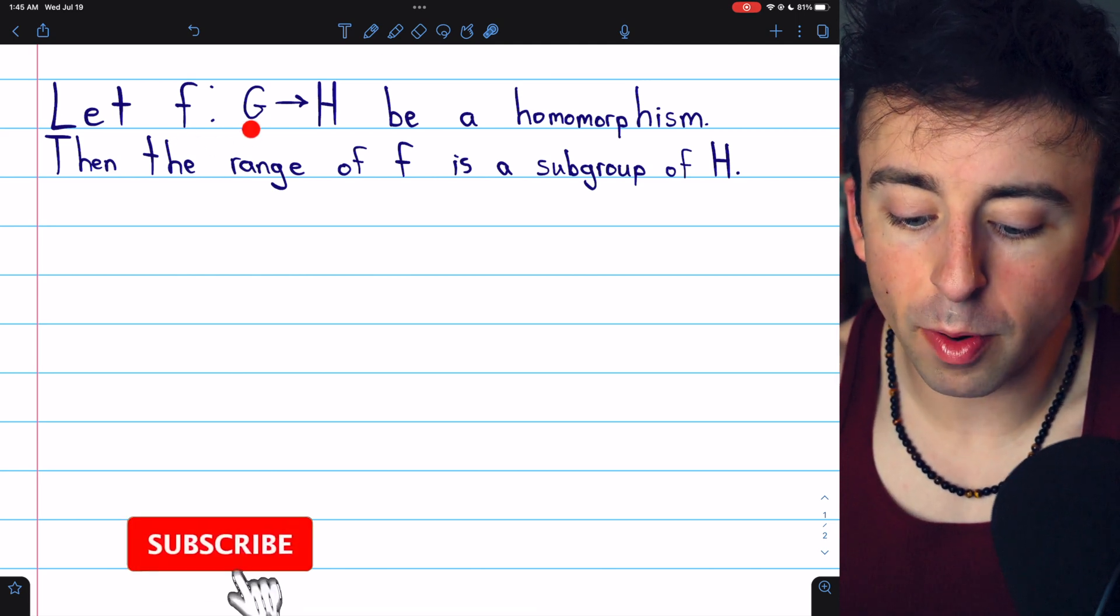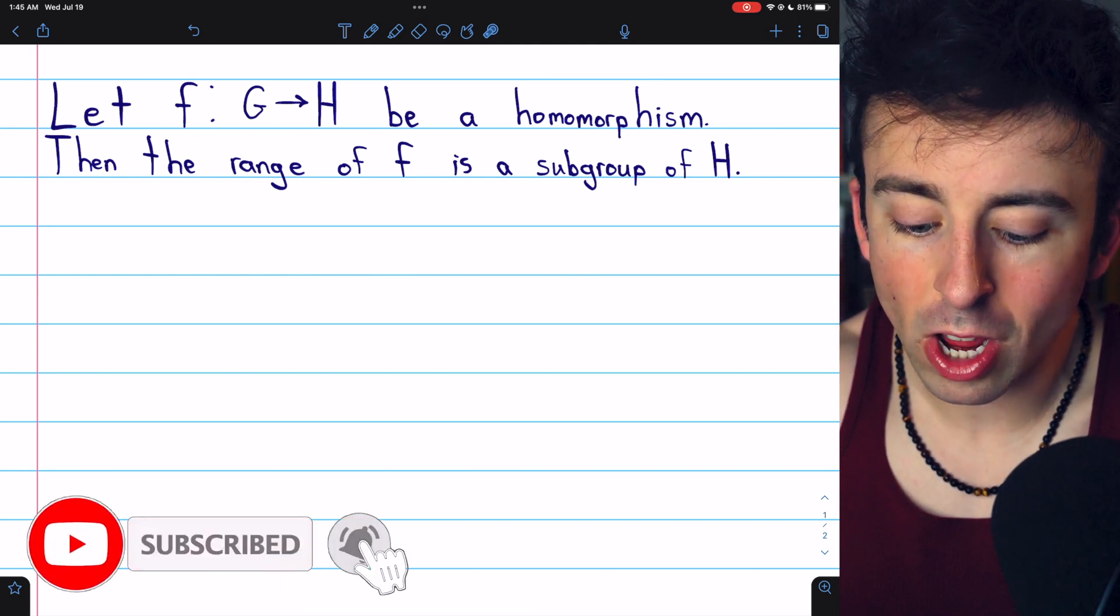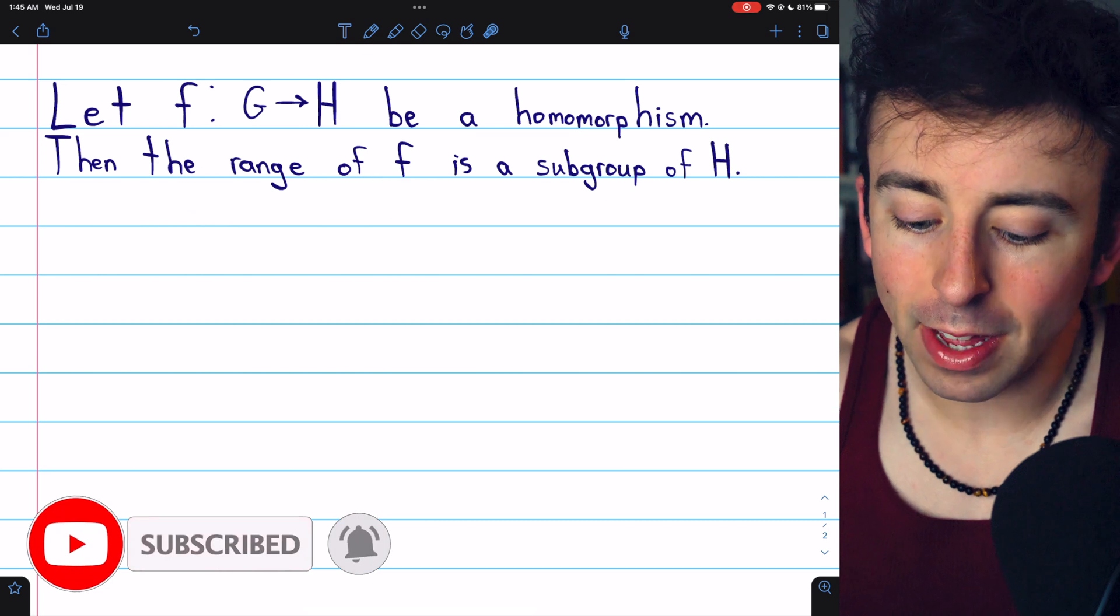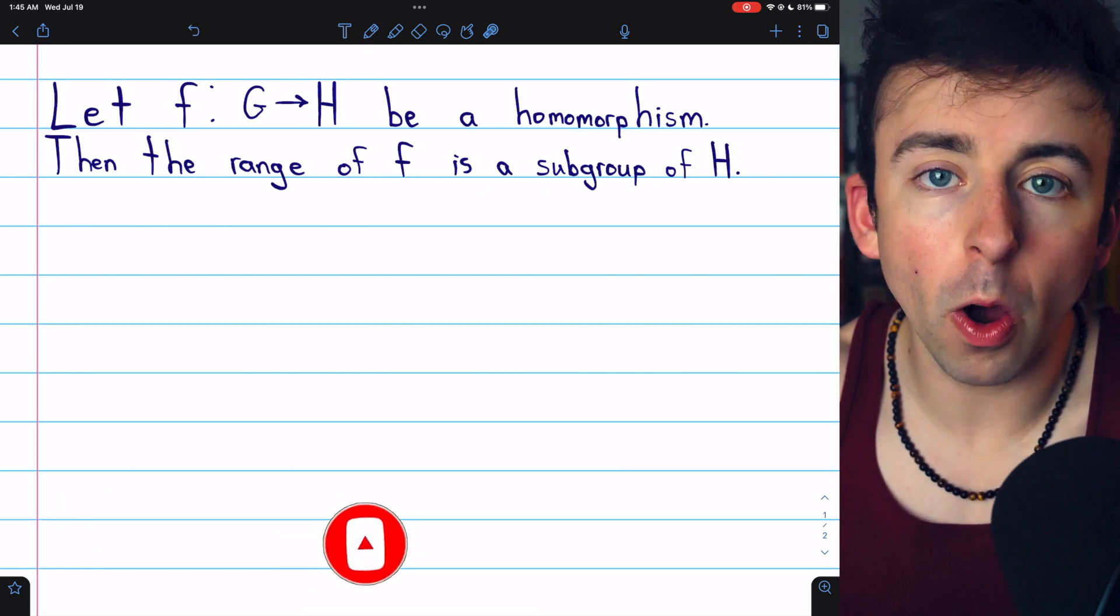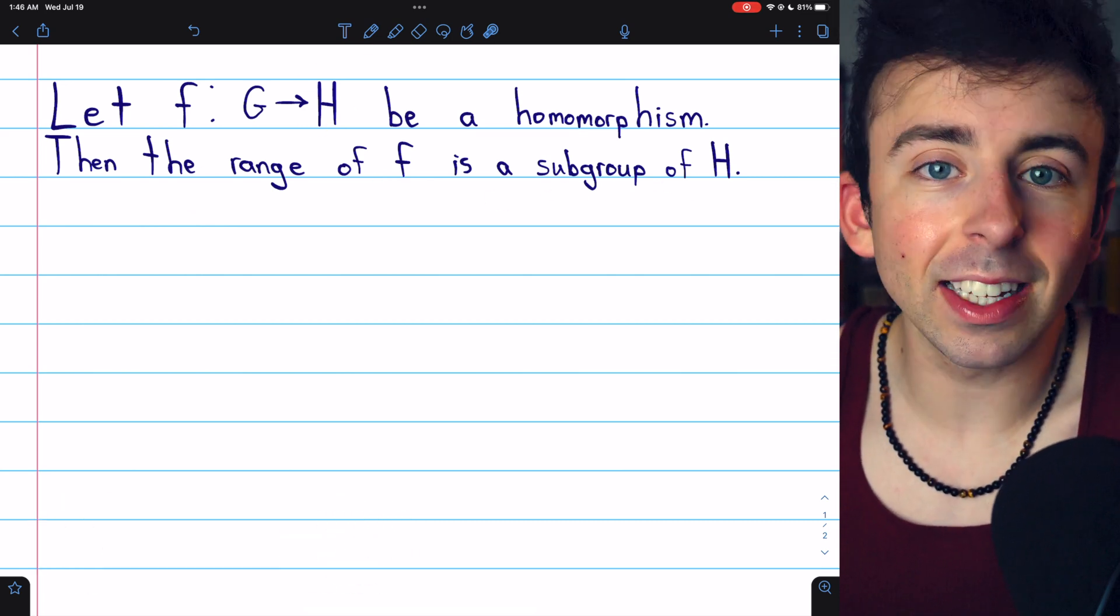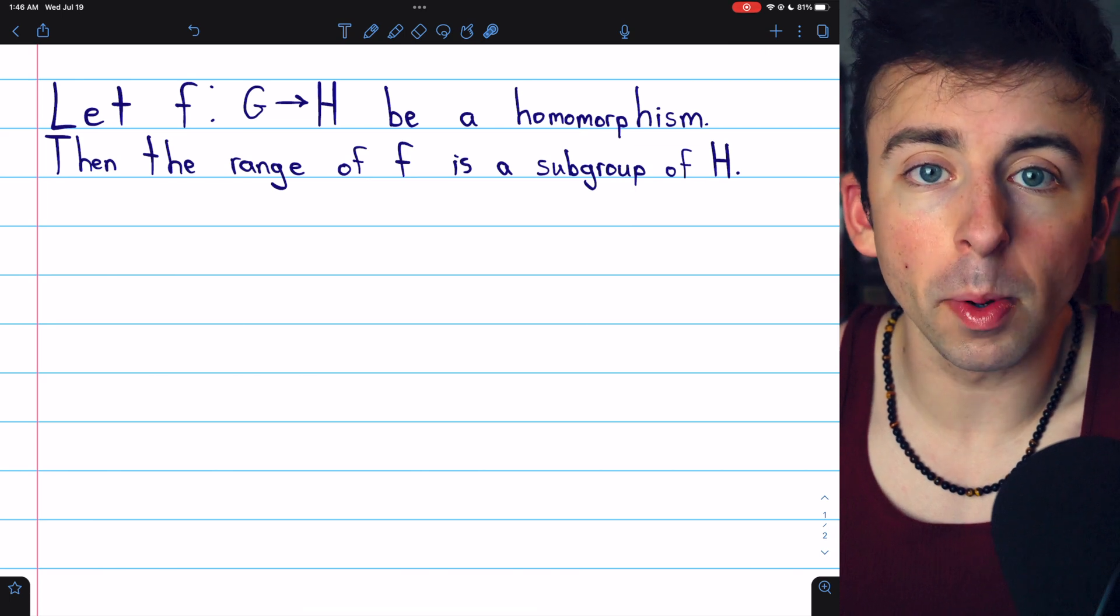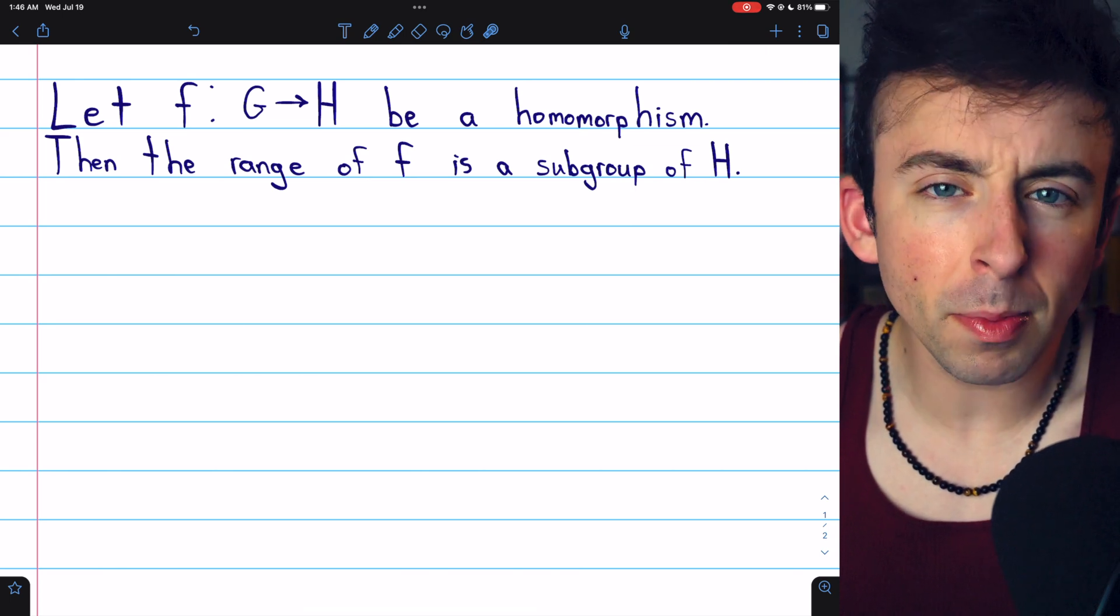If F is a homomorphism from a group G to a group H, then the range of F is a subgroup of the codomain H. I'll leave a link in the description to my lesson introducing homomorphisms if you need a review. This will be a pretty easy proof.